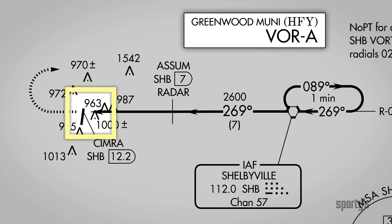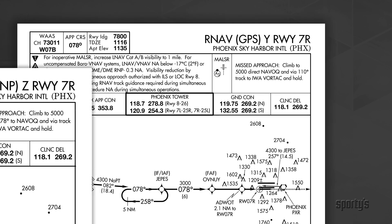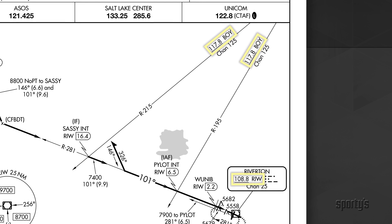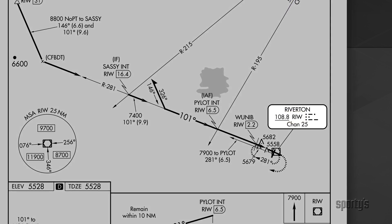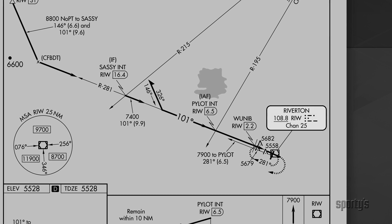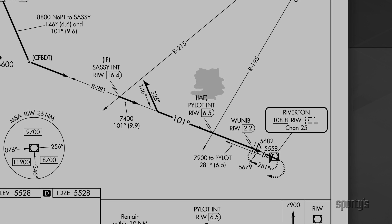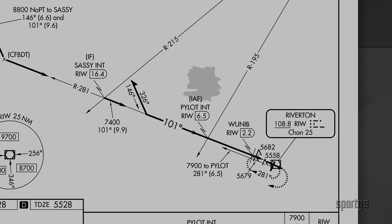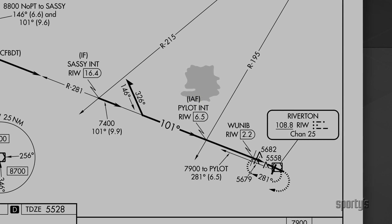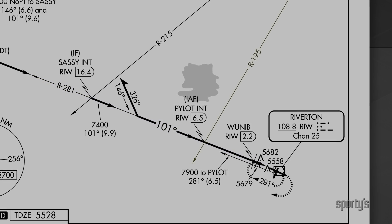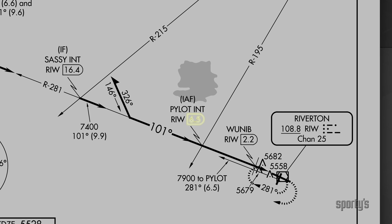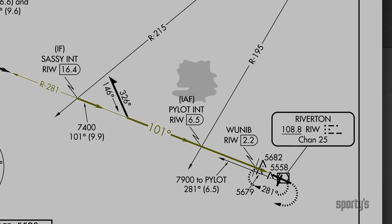Using the letter helps identify specific approaches. Letters are also used if there are multiple straight-in approaches of the same type to a runway; in this case they start at the end of the alphabet and work backwards. Frequencies for all NAVAIDs used in the approach are shown on the plan view, and the Morse identifier for a primary approach NAVAID will also be shown. PILOT intersection is labeled as an initial approach fix, or IAF. It can be identified as the intersection of the 281-degree radial of Riverton and the 195-degree radial of Boysen Reservoir VOR, or as the 6.5 DME fix on the 281-degree radial of Riverton.